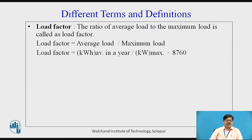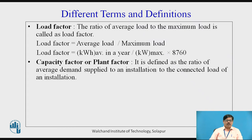For the annual load factor, it is calculated as the kilowatt-hours average in a year divided by the kilowatt-hours maximum utilized in a year. This can also be expressed as kilowatt-hours average in a year divided by the maximum load in kilowatts multiplied by the hours in a year, that is 8760 hours.